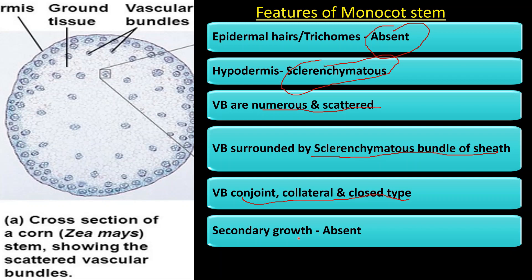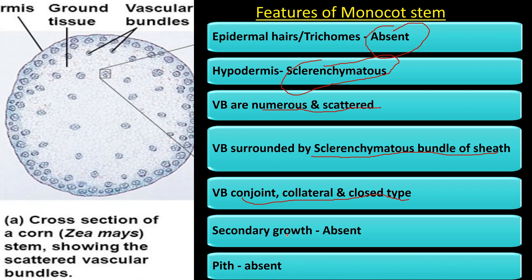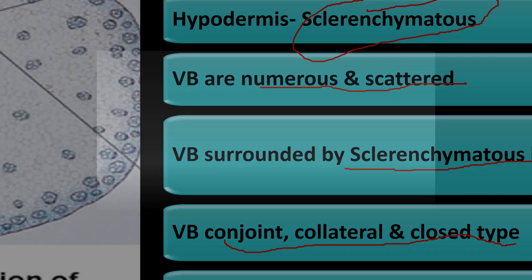Pith is absent in monocot plants. I hope you are clear with the structure of the dicot stem as well as the monocot stem. I request you all to like my channel, share it, and subscribe. Thank you.